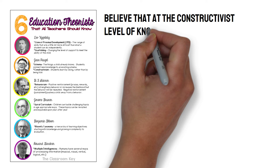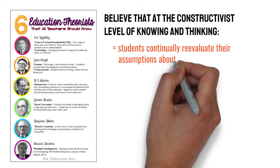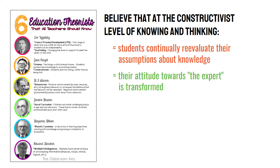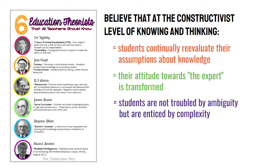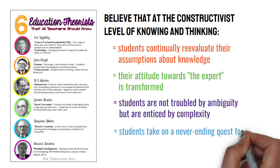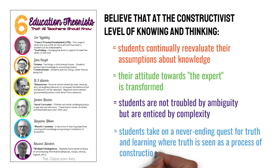Educational theorists believe that, at the constructivist level of knowing and thinking, students continually re-evaluate their assumptions about knowledge. Their attitude towards the expert is transformed. Students are not troubled by ambiguity, but are enticed by complexity, and students take on a never-ending quest for truth and learning, where truth is seen as a process of construction in which the knower participates.